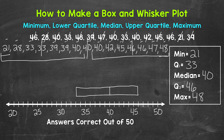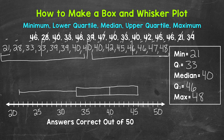Inside the box we have the median, or second quartile, which is 40. So let's draw a line at 40 to represent the median. Then lastly we have the whiskers, which extend to the minimum and to the maximum. Let's do the minimum first, which is 21 — make a mark at 21 and extend the whisker out to 21. Now let's extend a whisker to the maximum, which is 48 — make a mark at 48 and extend the whisker to that maximum.